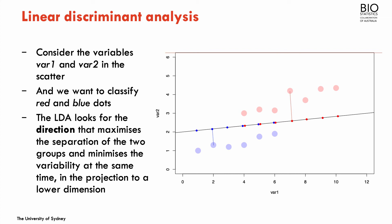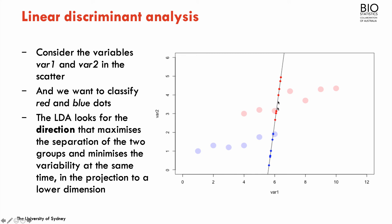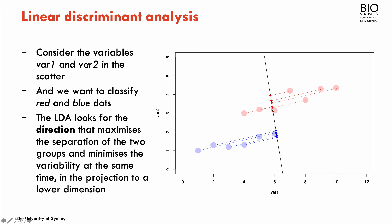In one direction, there is some separation of the groups but some red dots are mixed with the blue dots, and there is large variability in this projection. Looking at other directions, you can find one that maximizes the separation while the variability is much lower. As you move along toward this optimal line, the variance decreases and the separation improves. This is the direction that best separates the two groups and minimizes the variability of the projection into one dimension.